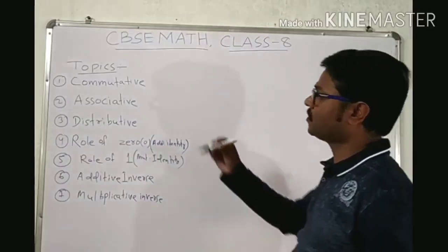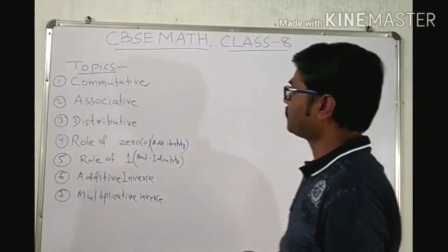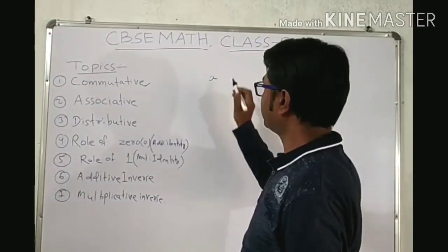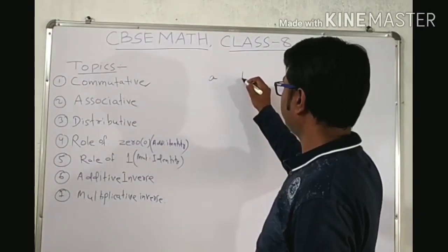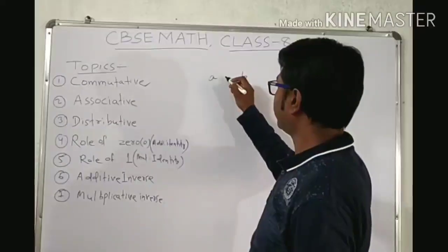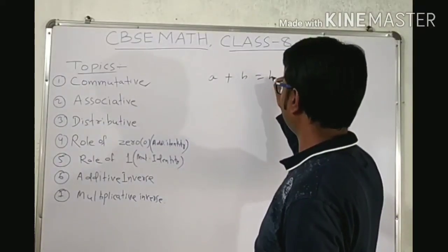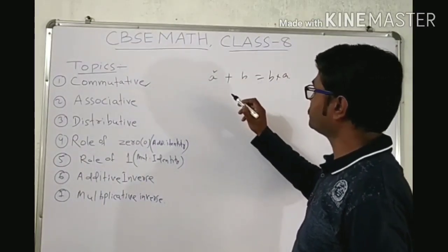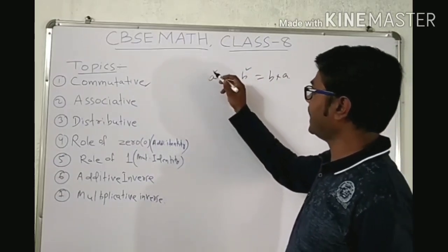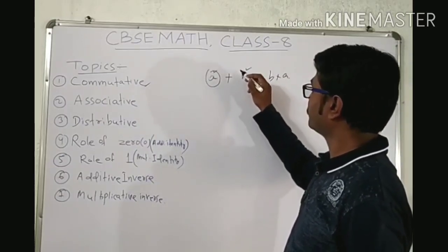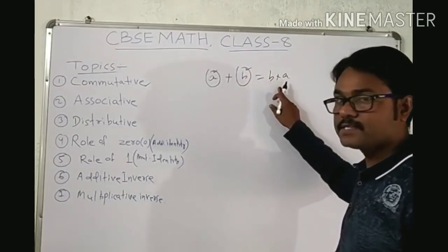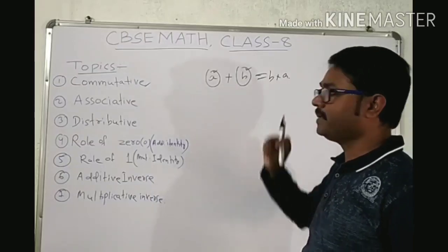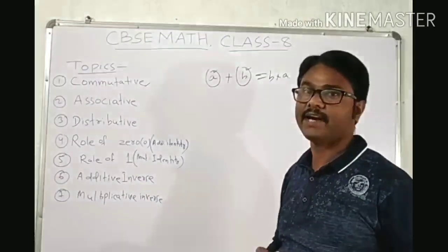First one is commutative property. Commutative property for rational numbers states that if A and B are rational numbers, then A plus B is equal to B plus A. That means if you add A with B, and you reverse the order, the result is the same. Commutative property of rational numbers is satisfied under addition.